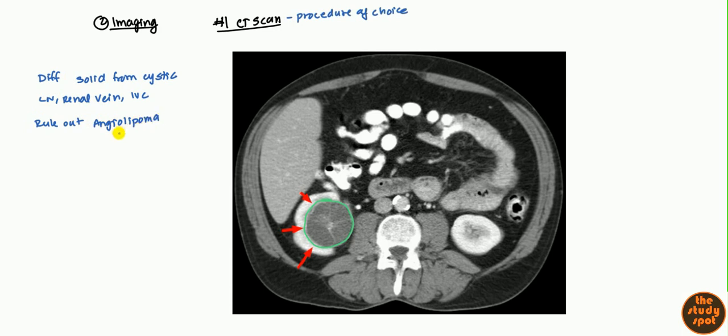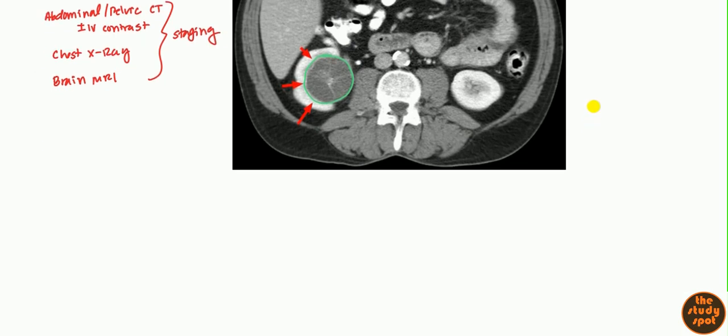This is important in staging. It can also help rule out angiomyolipoma which is an important differential. As far as doing CT, you want to do other imaging modalities but that's for staging. Not only do you want to do CT of the abdomen and pelvis with or without IV contrast, you're going to want to do a chest x-ray looking for any lung metastasis, and you want to do a brain MRI looking for metastasis. This is completely for staging to see if there's any metastasis throughout the whole body.